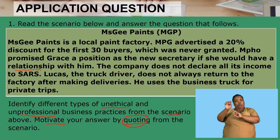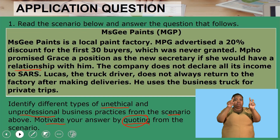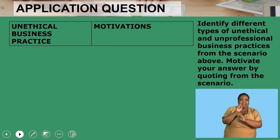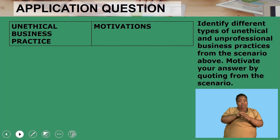When you quote, you take it word for word — you do not change anything. Verbatim, as is. Nothing should be changed. We do not cut sentences. So motivate your answer by quoting from the scenario — that's what you need to do. Let's start now.